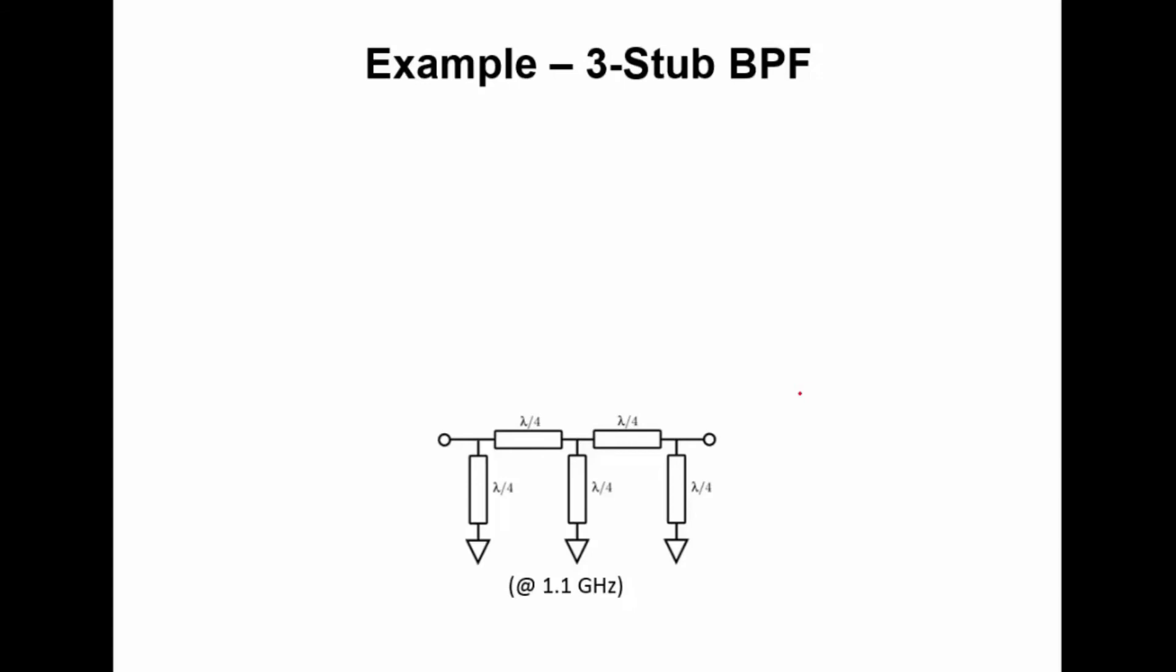So here's a filter consisting of three short-circuited stubs: lambda by 4, lambda by 4, lambda by 4 in each case short-circuited. Now any one of these would give me a bandpass response as I just pointed out. If I combine three of them in parallel, we would expect that I would get a very narrow bandpass response because these three responses would just kind of combine to give me a narrow response. That's not necessarily what I want.